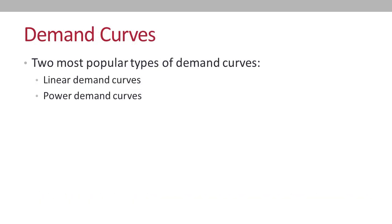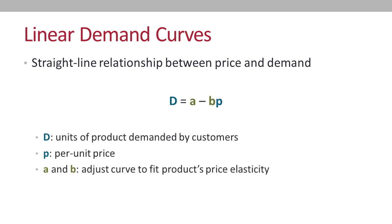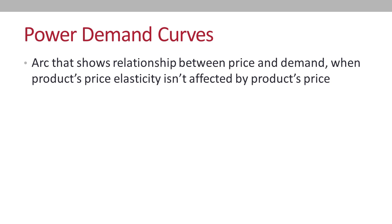There are several different flavors of demand curves, but we're going to explore the two most popular tonight: linear demand curves and power demand curves. Linear demand curves depict a straight-line relationship between a product's price and customer demand. Mathematically, D is the number of units demanded, P is the price per unit, and A and B adjust the curve — Excel will automatically calculate those values for us. Power demand curves are arcs that depict the changing relationship between price and demand when a product's elasticity isn't affected by price.